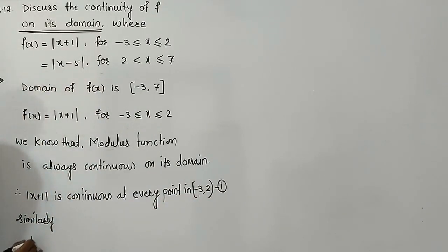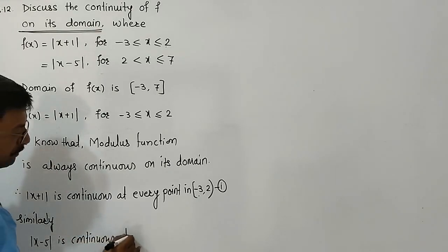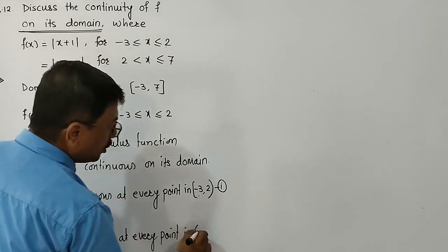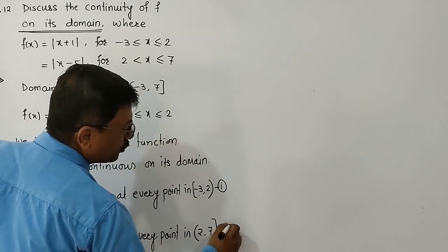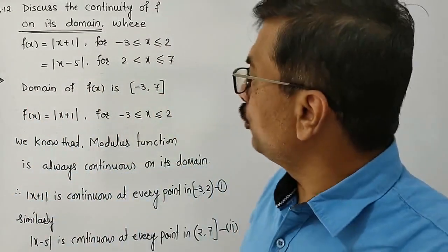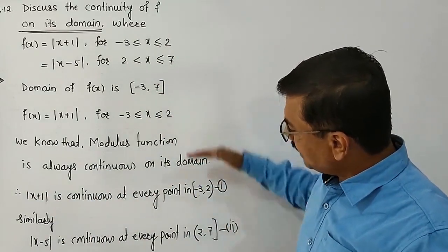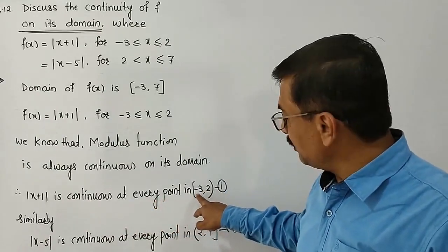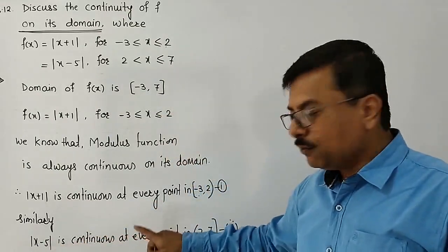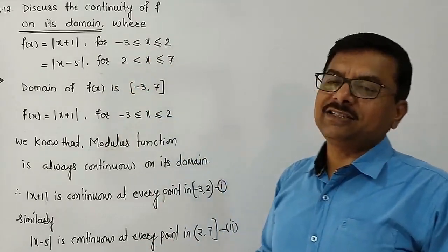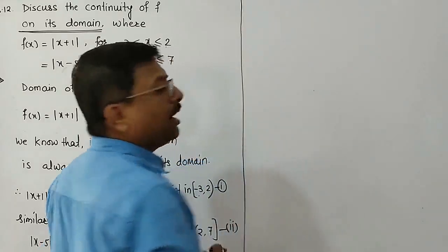Similarly, we can say that |x-5| is continuous at every point in the semi-open interval (2, 7]. So |x+1| is continuous on [-3, 2) and |x-5| is continuous on (2, 7]. Now we need to discuss continuity at the break point x = 2, for which we need to find the left-hand limit, right-hand limit, and value of the function.